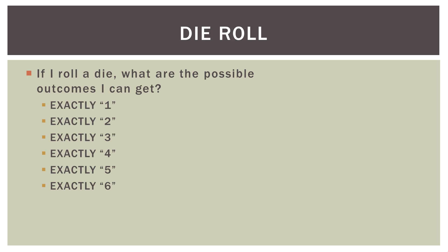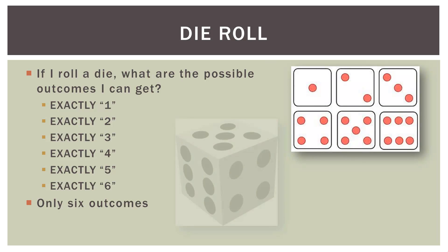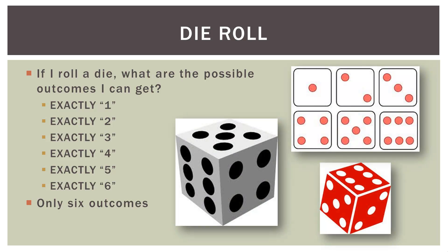Now what if I roll a die? If I roll a die, what are the possible outcomes? Well, I can get exactly a one, two, three, four, five, or six on a six-sided die. There are only six outcomes — there are no in-between values.